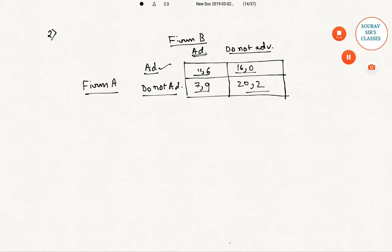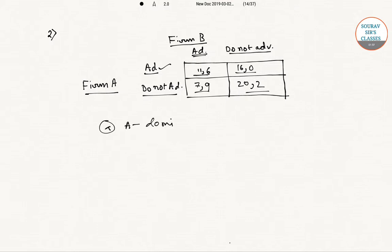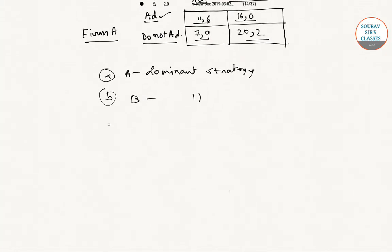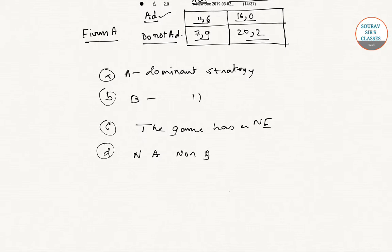There are four options given, out of which we need to find the right answer. Option A: Firm A has a dominant strategy. Option B: Firm B has a dominant strategy. Option C: the game has a Nash equilibrium. Option D: neither Firm A nor Firm B has a dominant strategy.